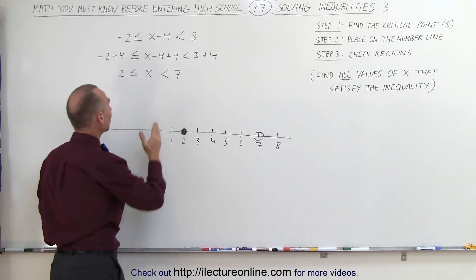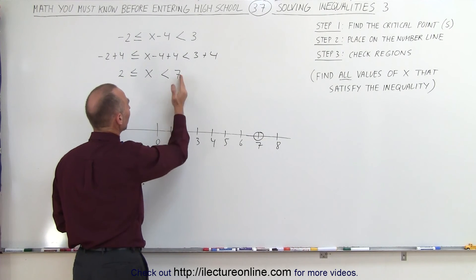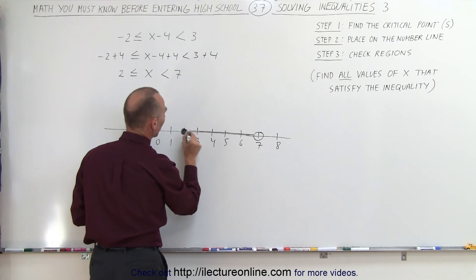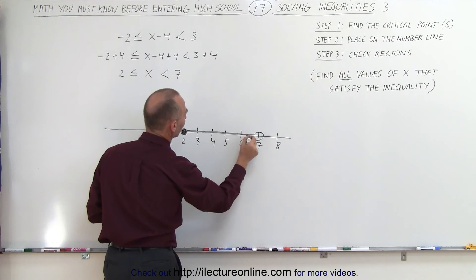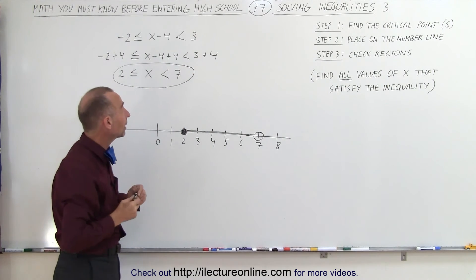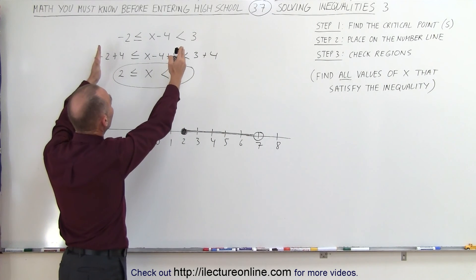We realize now that x must be greater than or equal to 2 and less than 7, and that means that only the numbers in between these two points satisfy the inequality, and there's the answer to your problem. So we can find the answer very quickly by simply simplifying what we have up here.